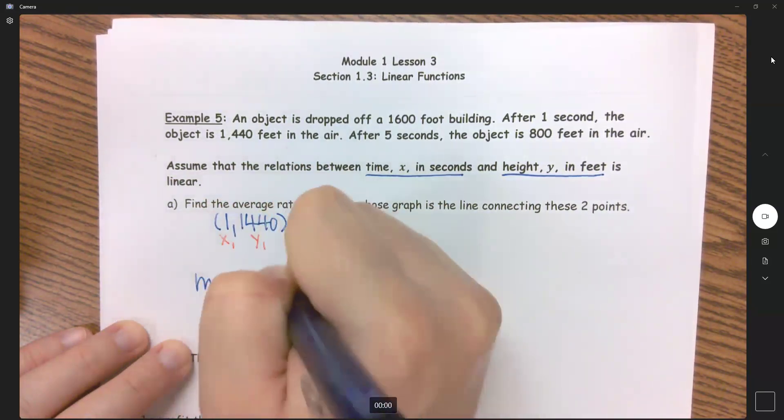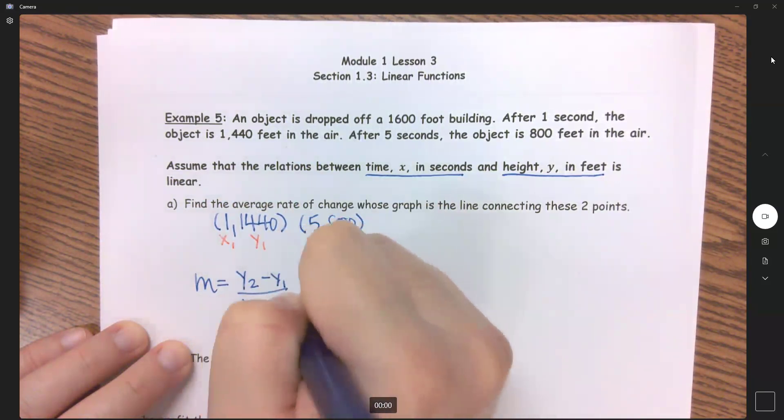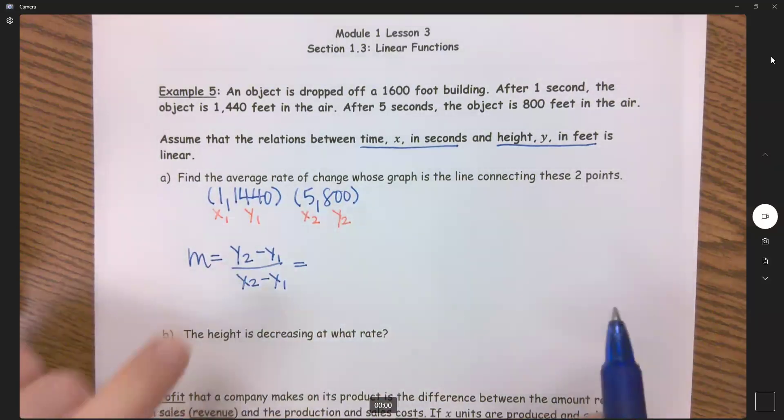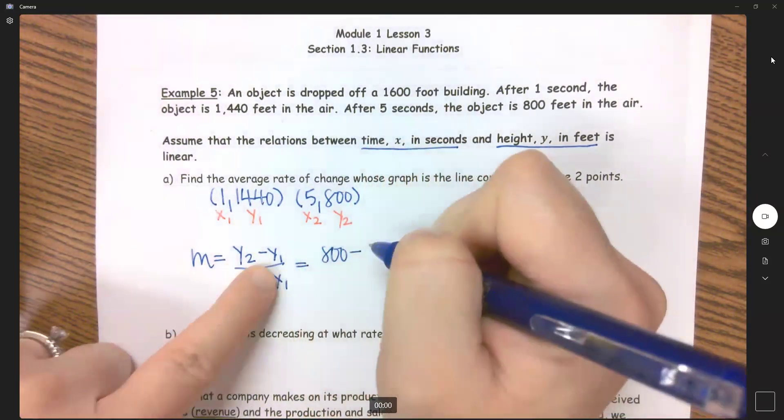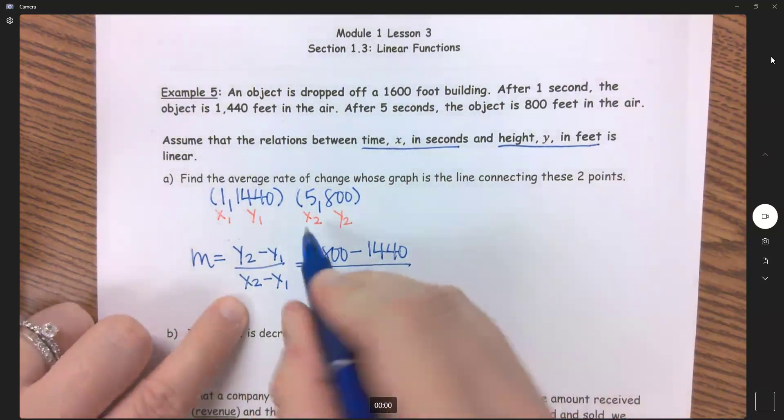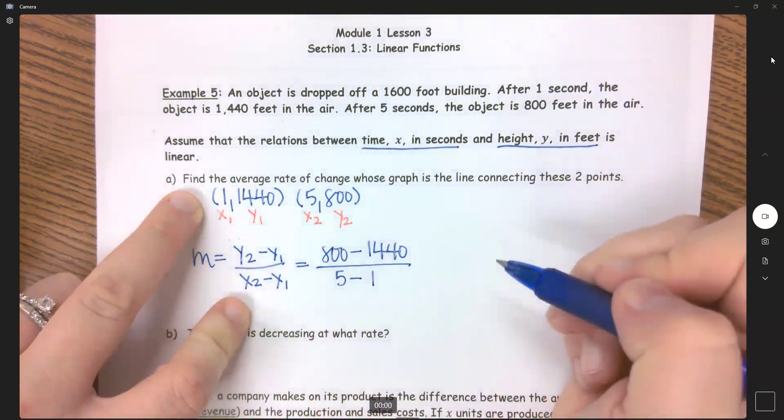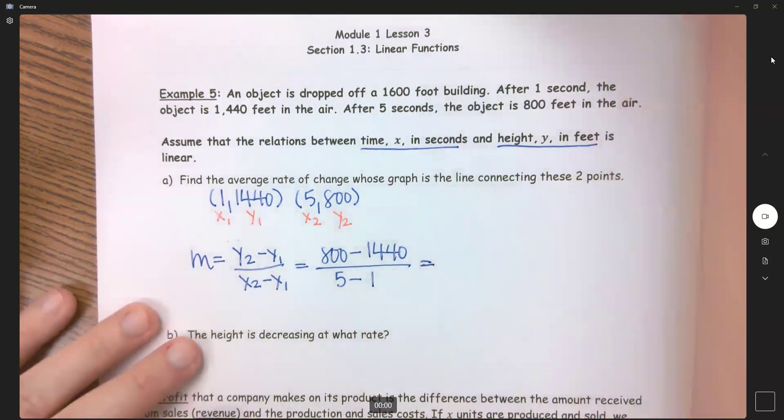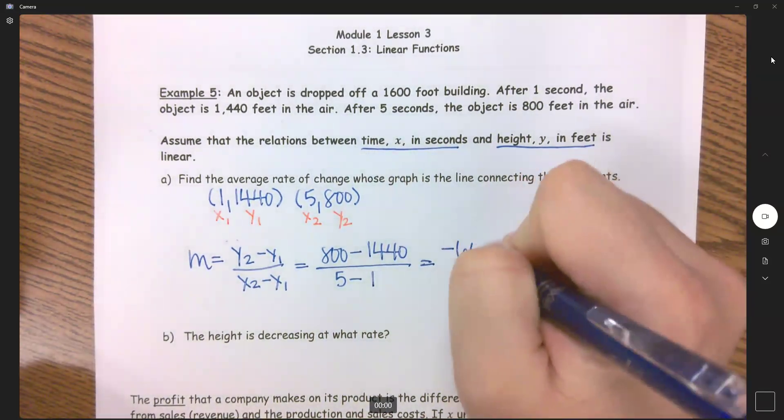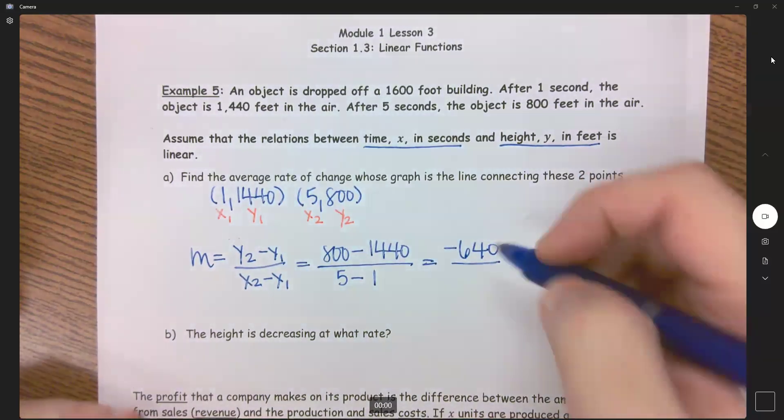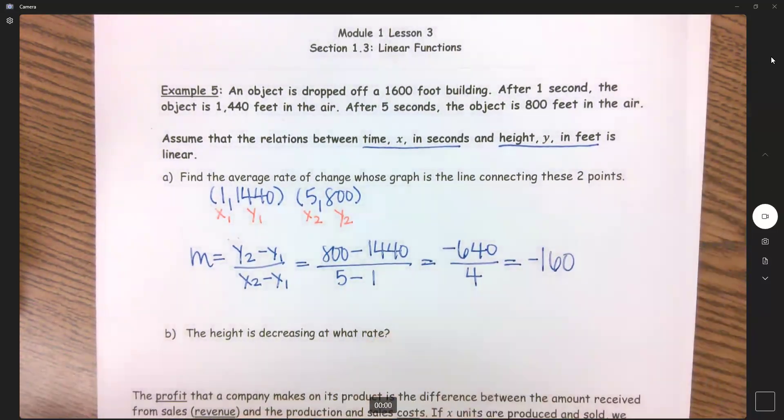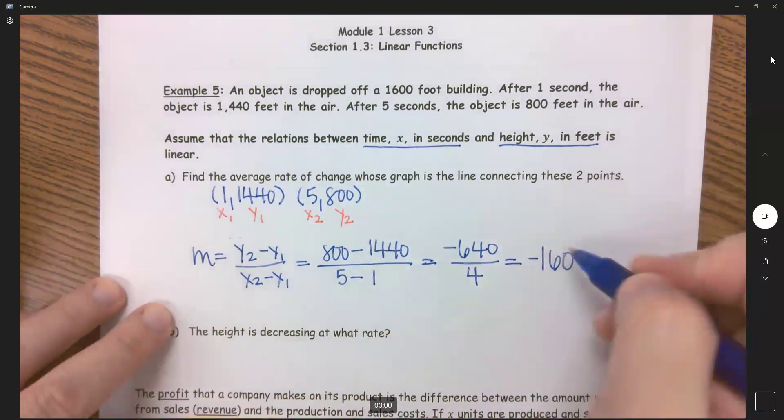Is y2 minus y1 over x2 minus x1. I have my formula, I have everything labeled, substitution, simplify. y2 is 800 minus y1 which is 1440 over x2 is 5 minus 1 my x1. So what is 800 minus 1440 gives me negative 640 over 4, and that's going to give me negative 160. So this is my average rate of change is negative 160.